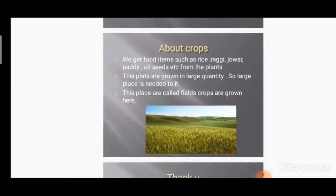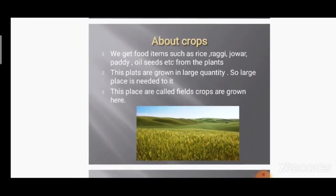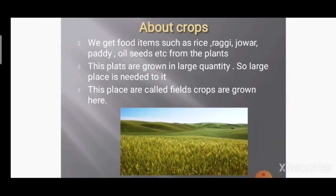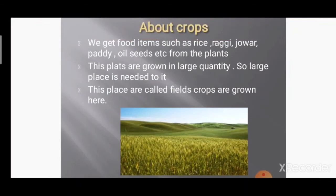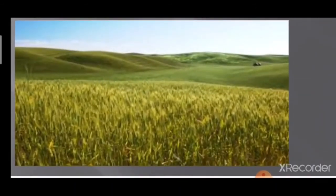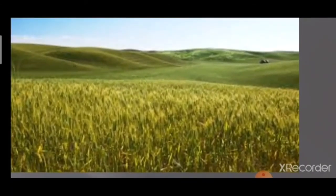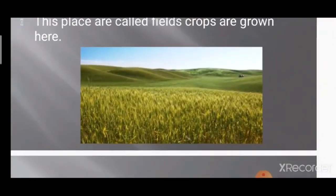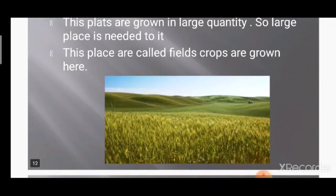Now let's learn about crops. We get food items such as rice, ragi, jowar, paddy, oil seeds, etc. from plants. These plants are grown in a large area — that large place is called a field. Crops are grown in the field. This is your rice field — you can see how large the area is. Crops like rice, ragi, jowar, paddy, and oil seeds require a large area to grow.